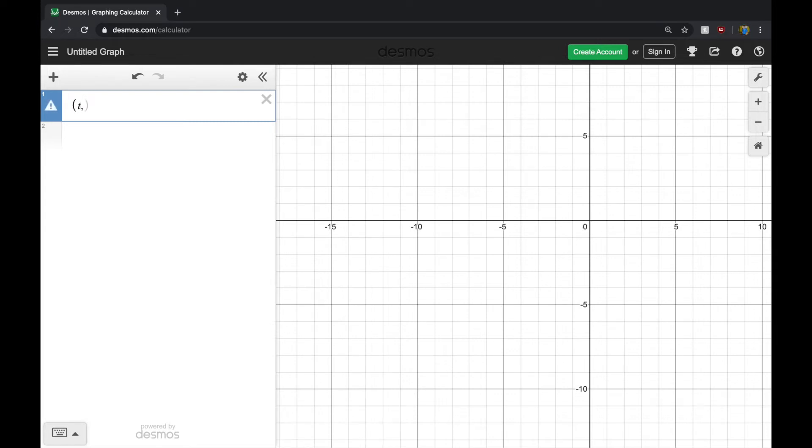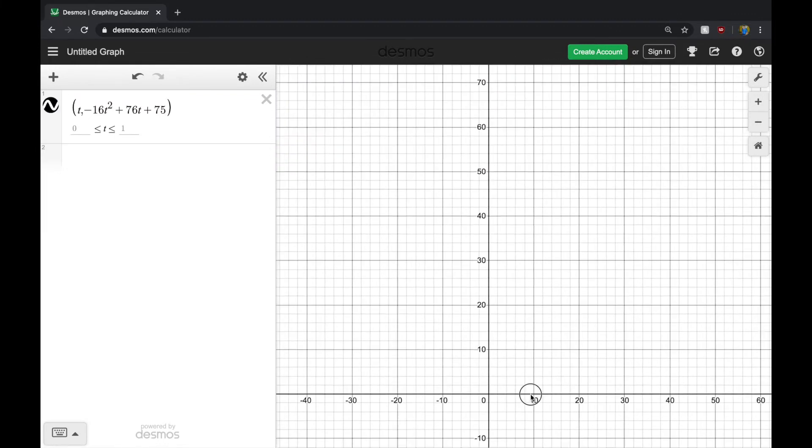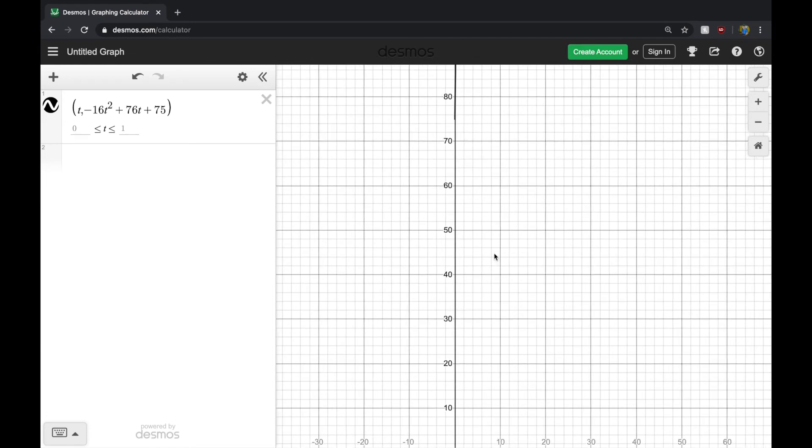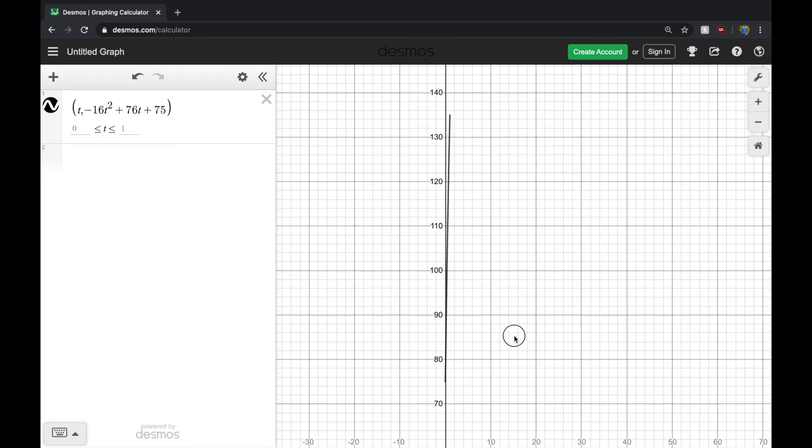My X is just going to be equal to T. My Y value is going to be negative 16 T squared plus 76 T plus 75. And as you can see, it just kind of goes straight up and then straight down.